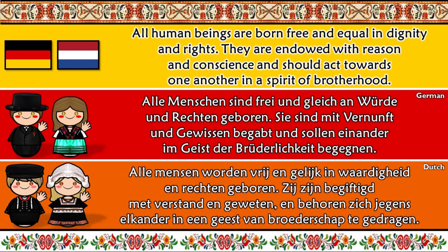Article 1 of the Universal Declaration of Human Rights in German: 'Alle Menschen sind frei und gleich an Würde und Rechten geboren. Sie sind mit Vernunft und Gewissen begabt und sollen einander im Geist der Brüderlichkeit begegnen.' In Dutch: 'Alle mensen worden vrij en gelijk in waardigheid en rechten geboren. Zij zijn begiftigd met verstand en geweten en behoren zich jegens elkander in een geest van broederschap te gedragen.'